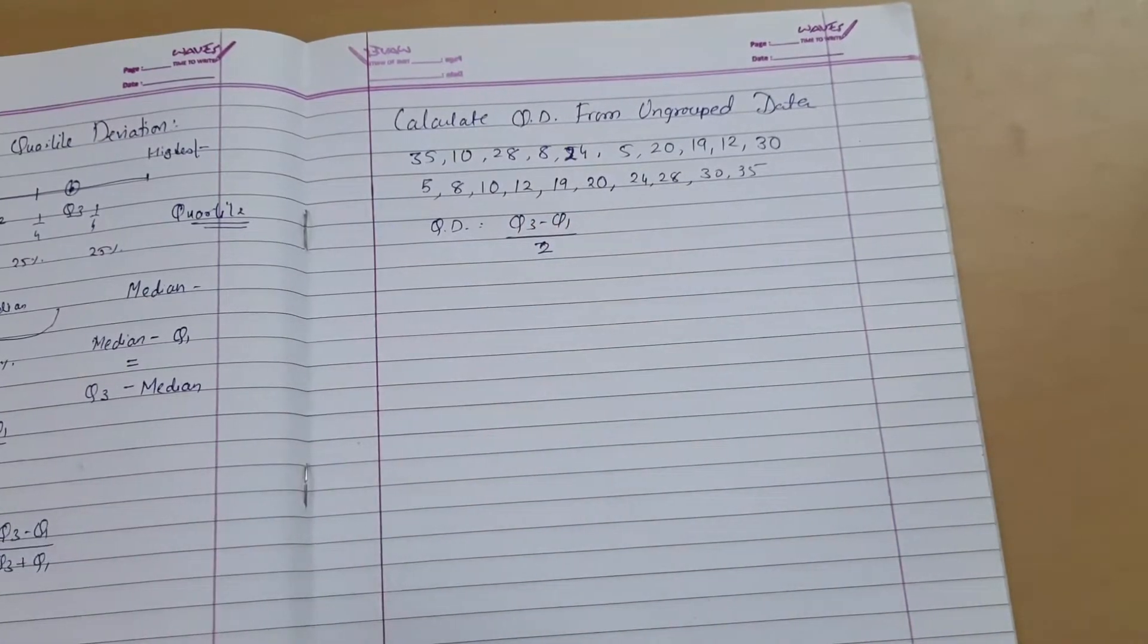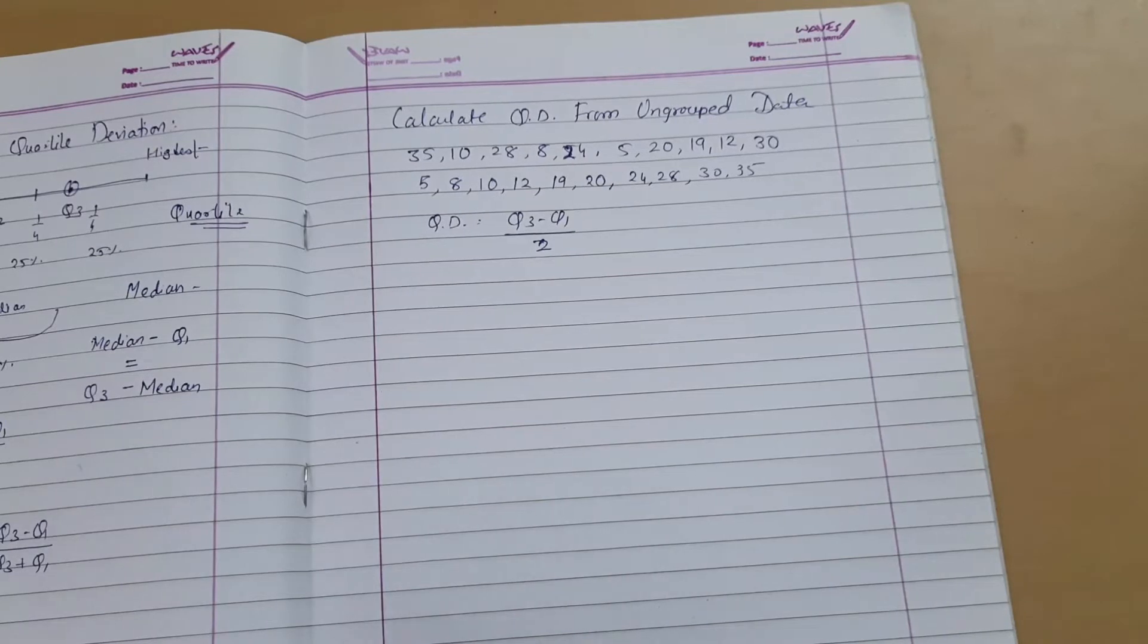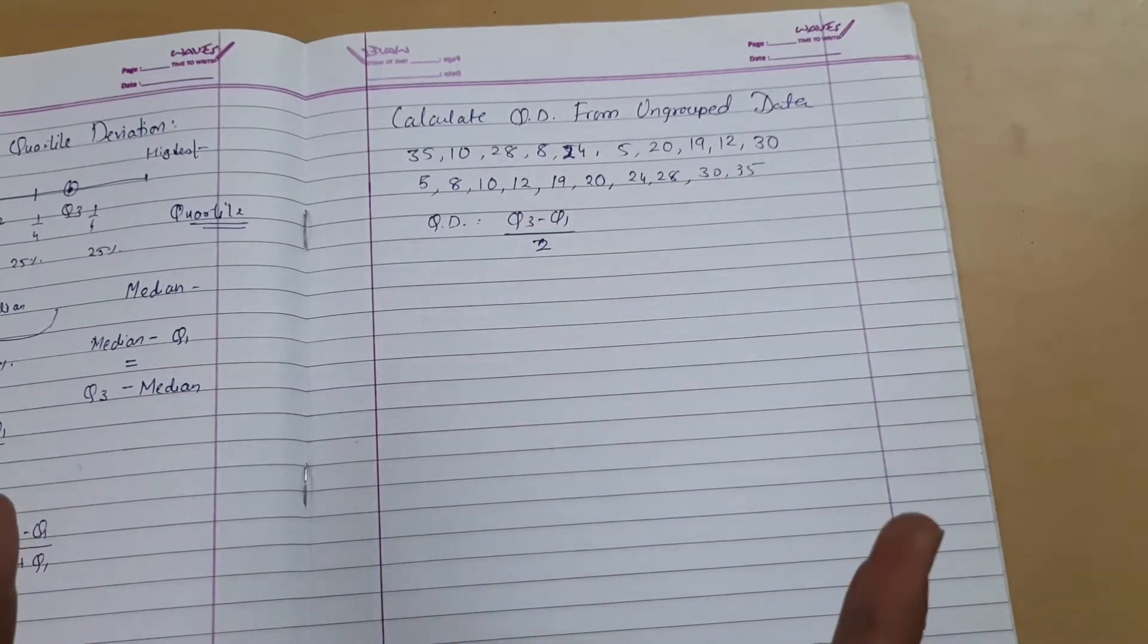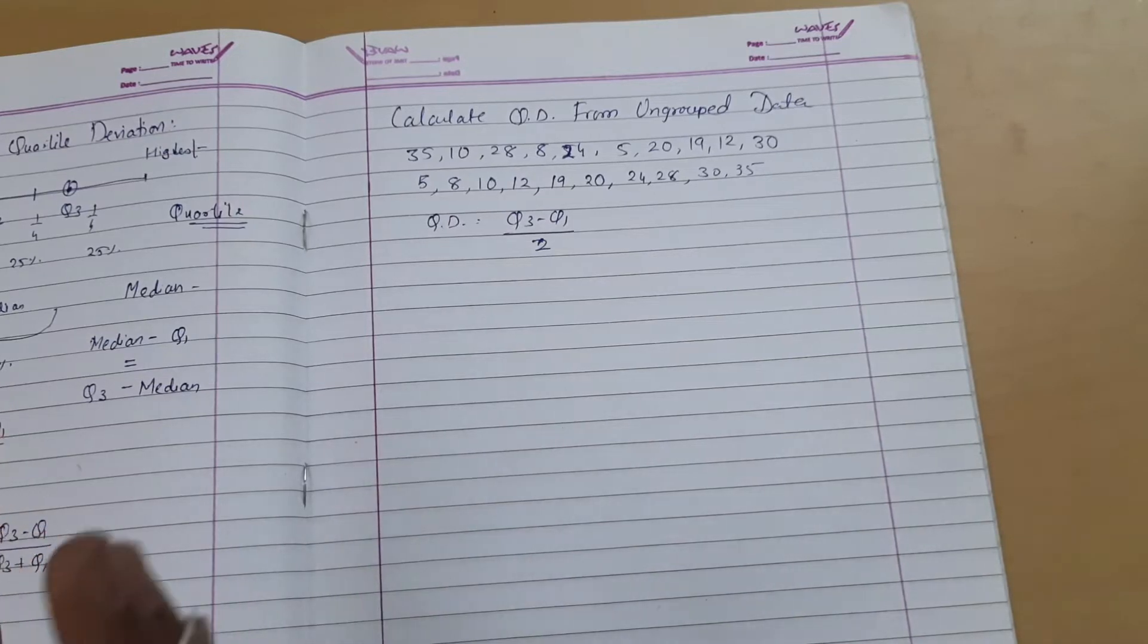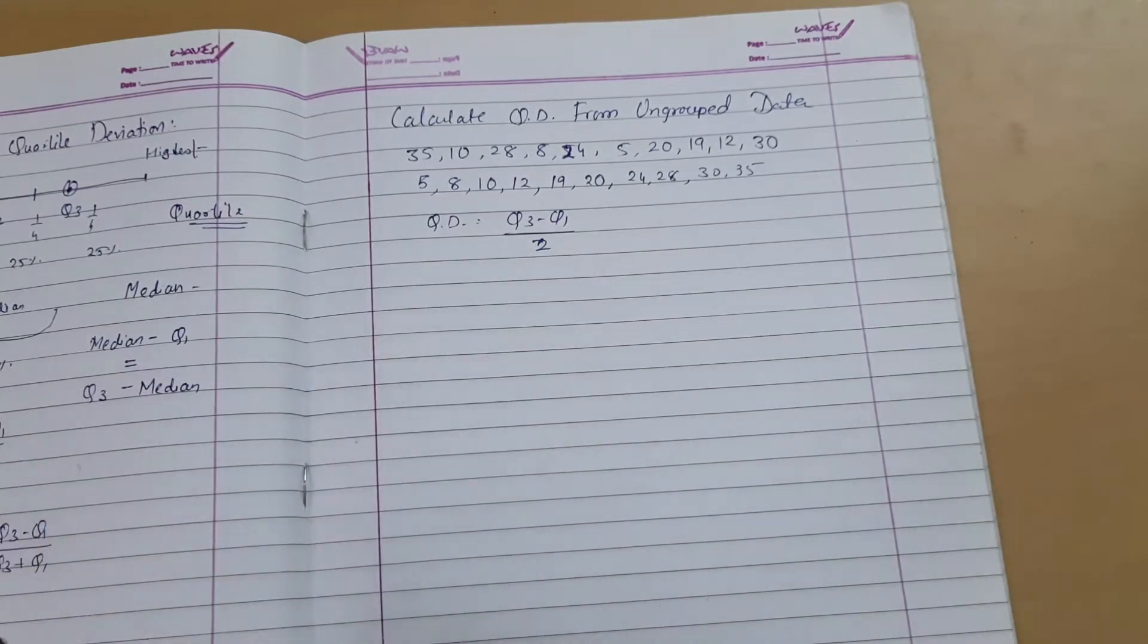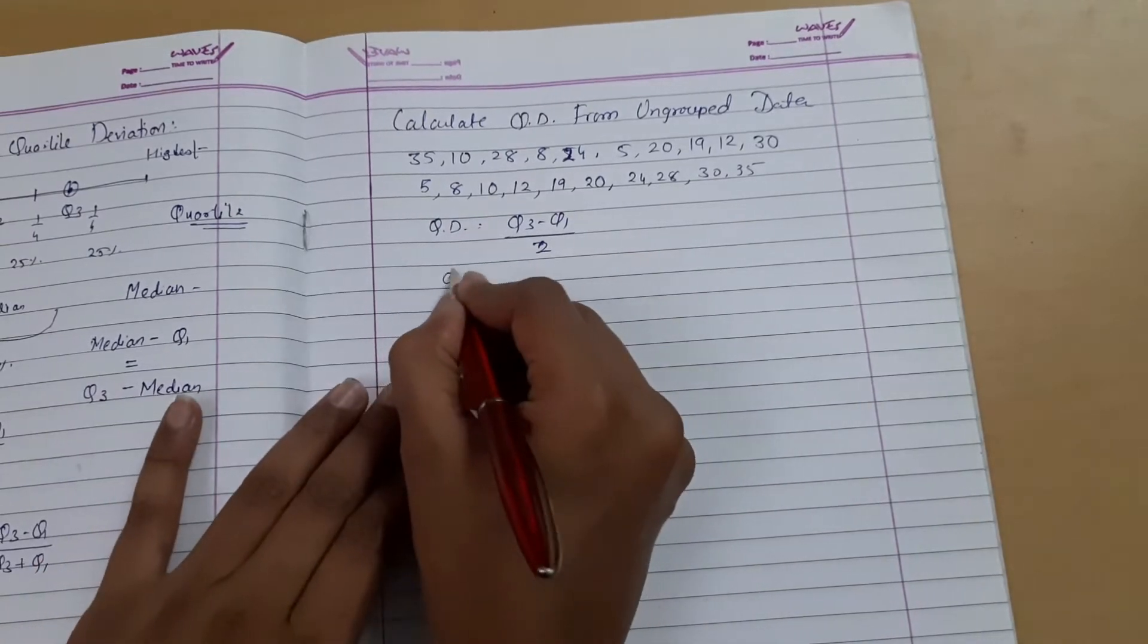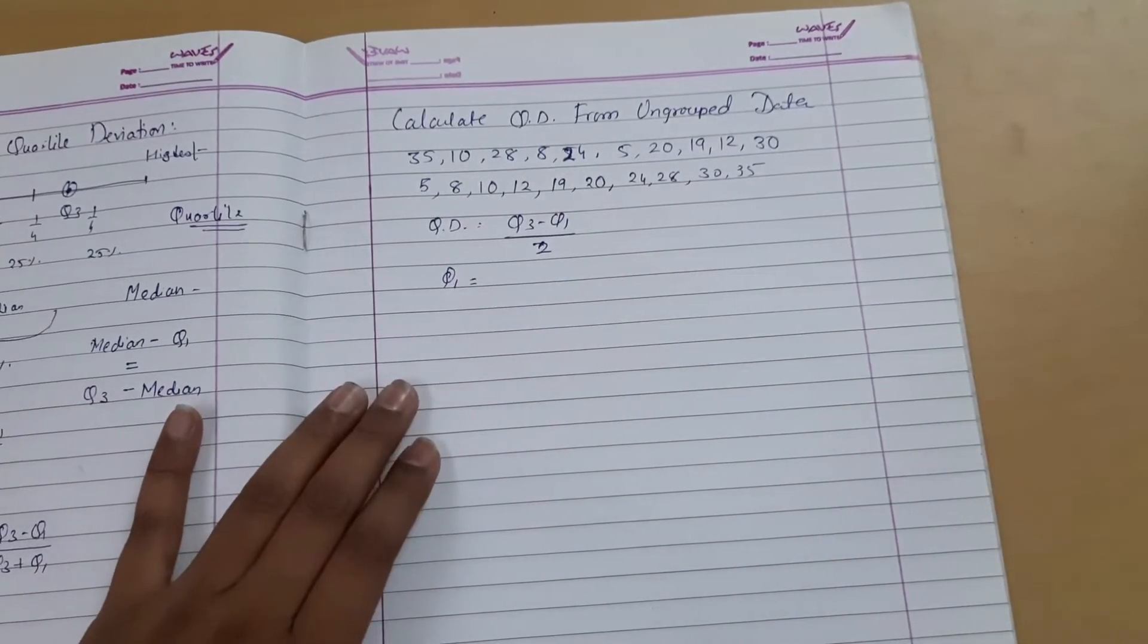Now how to calculate Q3? Q3 means the observation that divides the data into 3 parts: 25%, 25%, 25%, 25%. Three parts. And Q1 means the first part, one-fourth part. The first part of observations. So first, let's find Q1.